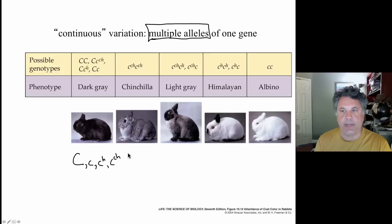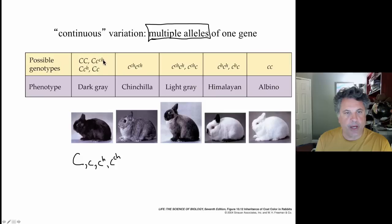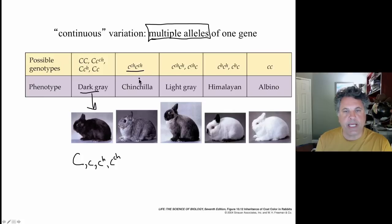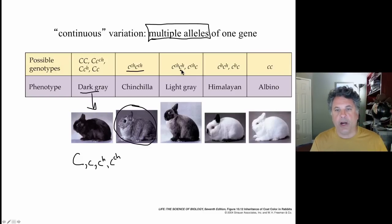These four alleles can be combined in a variety of genotypes. If you are homozygous for big C, or heterozygous big C with chinchilla or Himalayan or little c, you are a dark grey rabbit — big C is dominant for dark grey. If you are homozygous for the chinchilla allele, you have a chinchilla phenotype. If you are heterozygous for chinchilla and Himalayan, or for chinchilla and little c, you have a light grey phenotype. If you are homozygous for the Himalayan allele, or heterozygous Himalayan and little c, you have a Himalayan phenotype.